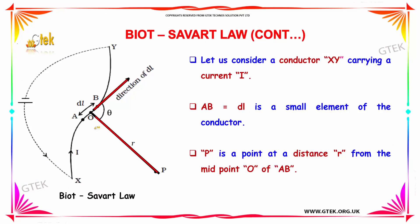Let us consider a small conductor element XY carrying a current I. AB is equal to dL, a small element of the conductor. P is a point at a distance R from the midpoint O of AB.